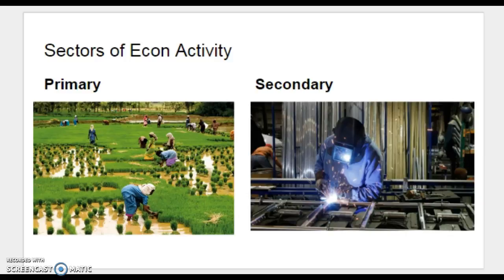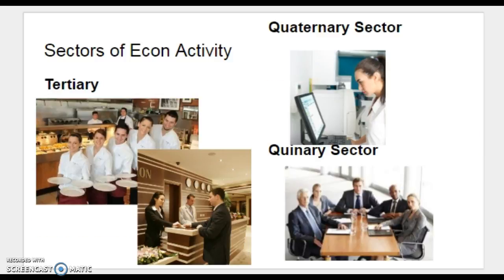At the second tier we have secondary activities, which include heavy industries, manufacturing, and textiles. The tertiary sector involves the exchange of goods produced in secondary activities. Examples of tertiary activities include retail, customer service, restaurants, hospitality, and other basic service jobs that occur in the tertiary sector of an economy.